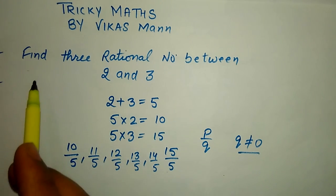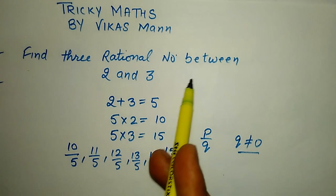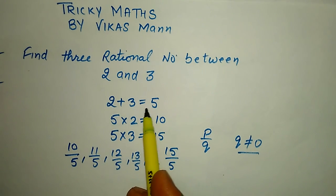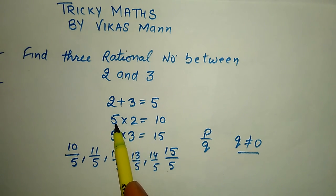First of all, read the question carefully. Find three rational numbers between 2 and 3. We have two numbers, 2 and 3. First of all, we have to add 2 plus 3. Then we will get 5. Then we have to multiply 5 with the first number, that is 2. We get 10, and then we have to multiply with 3. We get 5 into 3, 15.